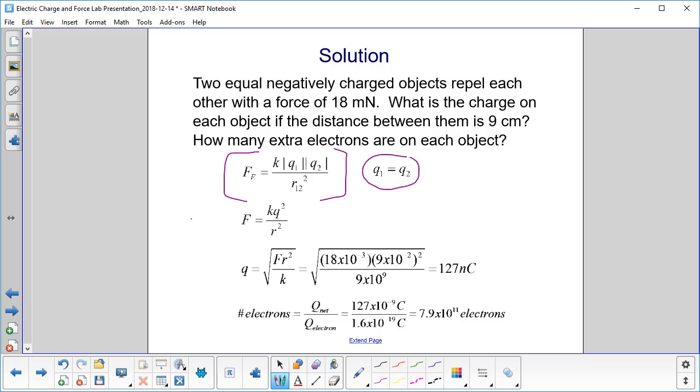So that reduces Coulomb's Law to F equals KQ squared over R squared. The Q's are equal.